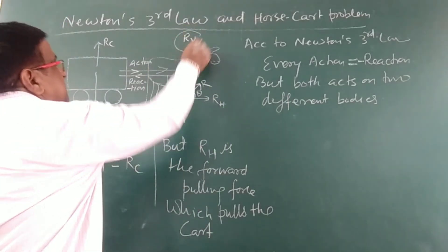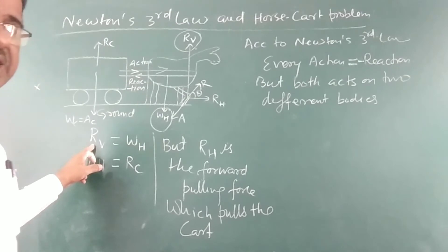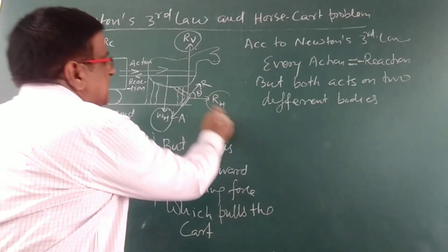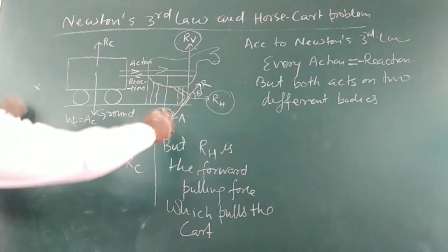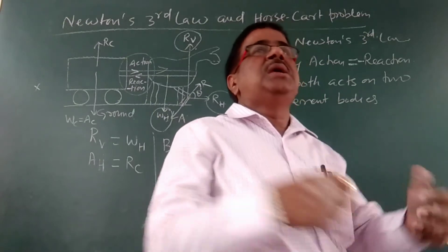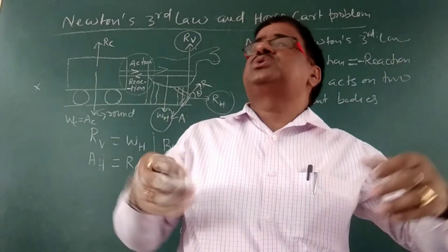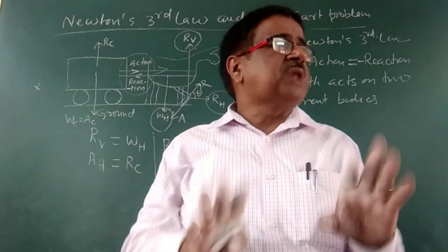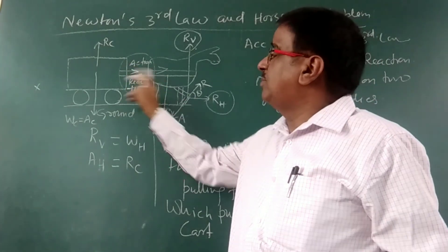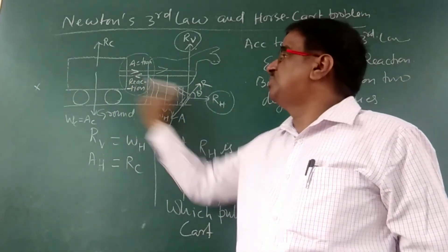The vertical component of the reaction balances the weight of the horse. The horizontal component remains free — it is not balanced by anyone. Consider an analogy: if you are on a bus and try to push it, the bus will not move because you are part of the system. Similarly, the reaction between the horse and cart is internal to the system and does not affect the motion of the system.